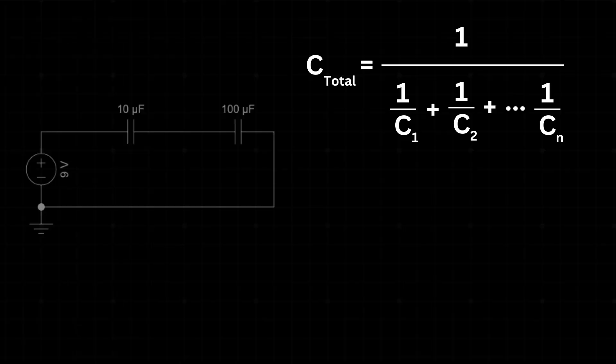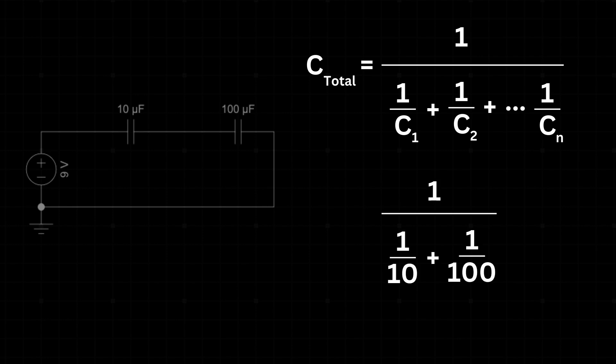In a series configuration, the total capacitance is found using the reciprocal formula 1 over C total equals 1 over C1 plus 1 over C2 and so on. For our example, this becomes 1 over 10 plus 1 over 100. Solving this, we get a total capacitance of approximately 9.09 microfarads.